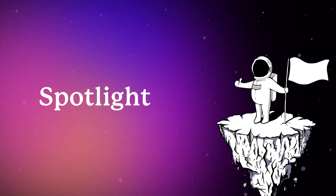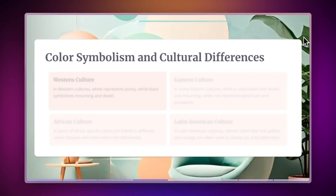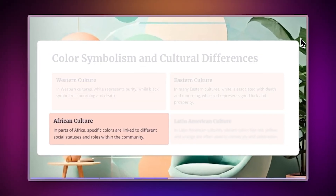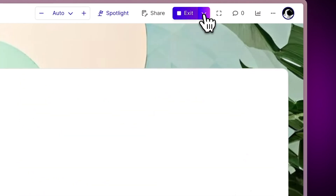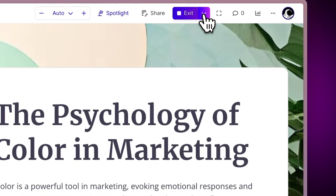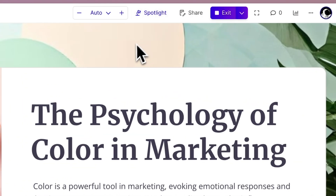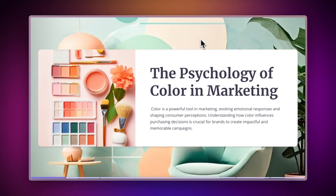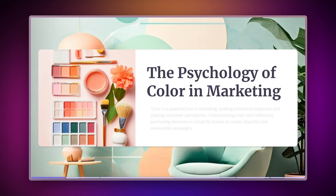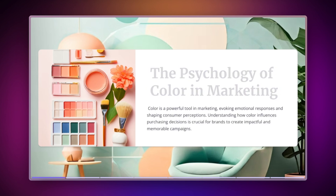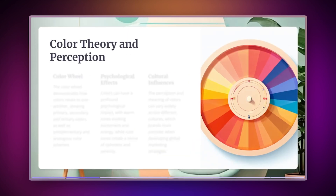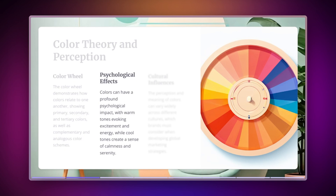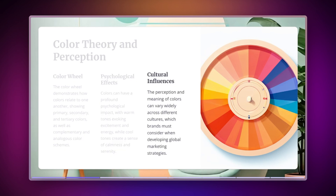Spotlight. If you want to draw attention to a specific part of your slide, use the Spotlight feature. In present mode, hover over the top of the screen and click Spotlight, or press S on your keyboard. This will highlight the part of the slide you're discussing, making it the focal point of your audience's attention. To switch to the next item, just press the up and down arrows.